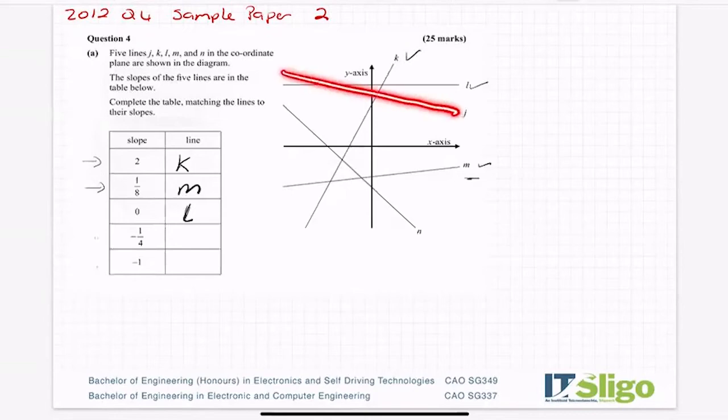So I'm left with J and N. And again, which one of them is steeper going down? It's N. So the biggest negative number must be N, which is minus one. So J then must be minus a quarter. That's that full question done. That could be worth as much as 15 marks.